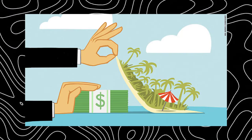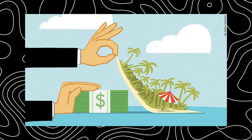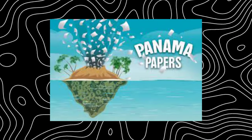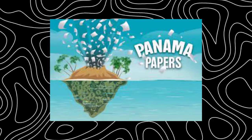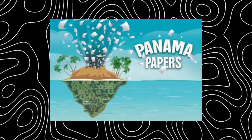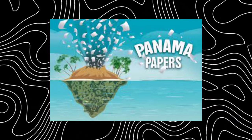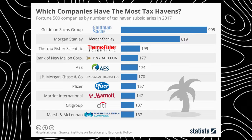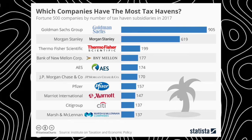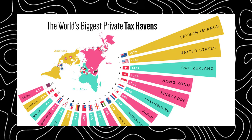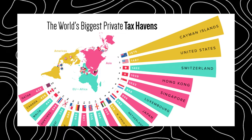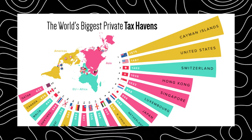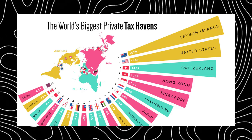Tax havens: countries or jurisdictions that attract foreign investors with comparatively low tax rates. Sometimes used negatively to describe places with very low rates for non-residential investors, like the Cayman Islands, which has become famous for offering low or no tax rates for wealthy investors. The Panama Papers scandal shed light on the secretive world of offshore banking, highlighting the legal and ethical dilemmas that wealthy individuals exploit. Unfortunately, these are methods that the average working individual does not have access to.